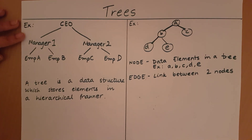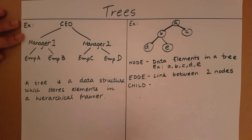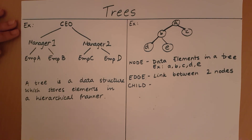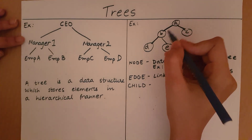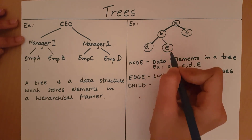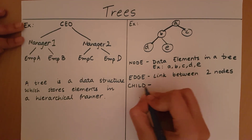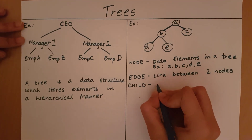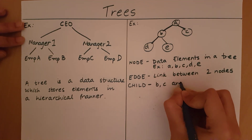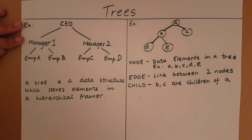Now that we have seen what a node and an edge is, let's look at what a child is. If a particular node branches out to subsequent nodes, the subsequent nodes are known as the children of that node. So A branches out to B and C, so B and C become the children of A. B branches out to D and E, so D and E become the children of B.